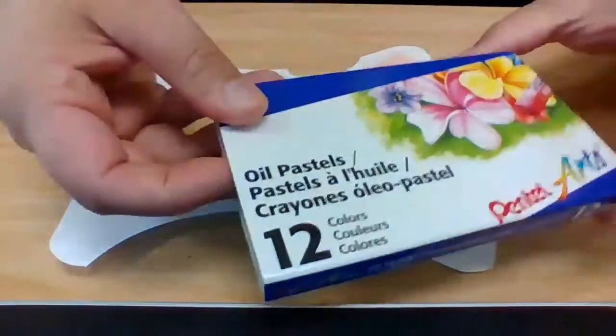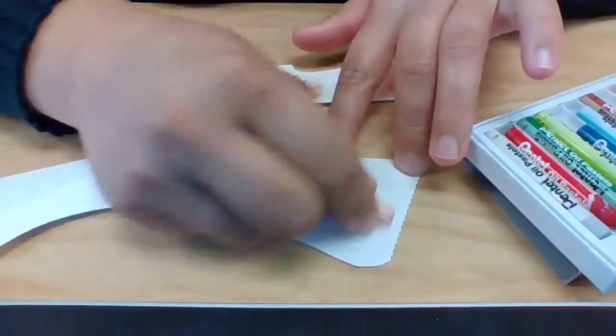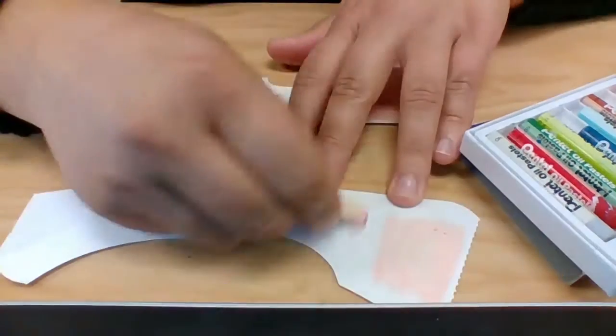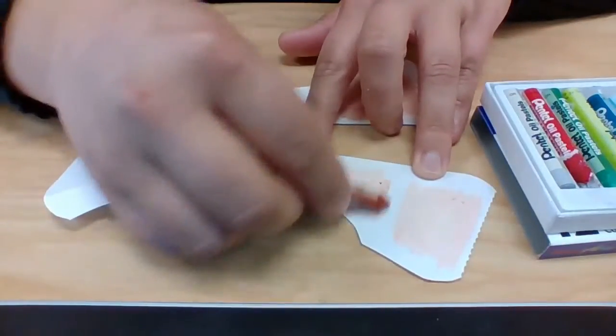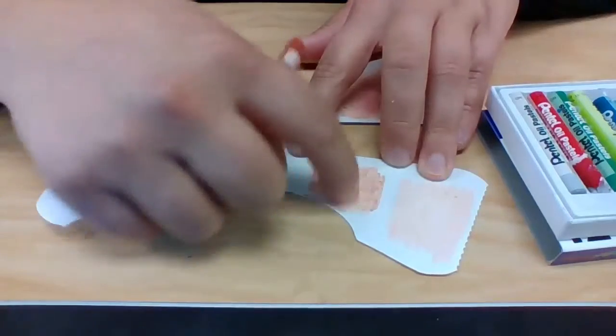So here we go. Once I take a look at my skin, I'm going to get the oil pastel color that matches it the most. My skin is pretty light, so I'm going to start with this peach color. And then I'm going to gradually add a little bit of brown since I'm not quite as light as that peach color.